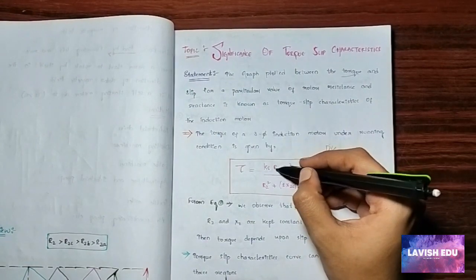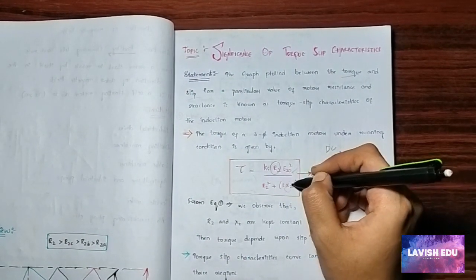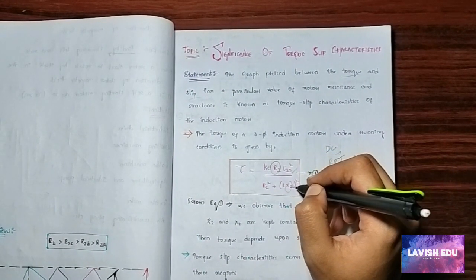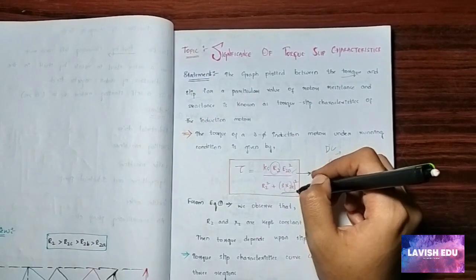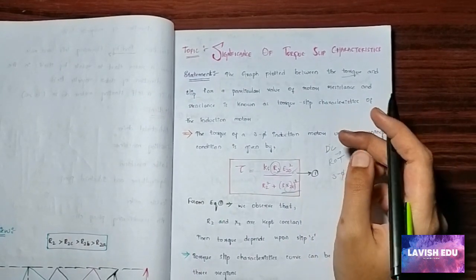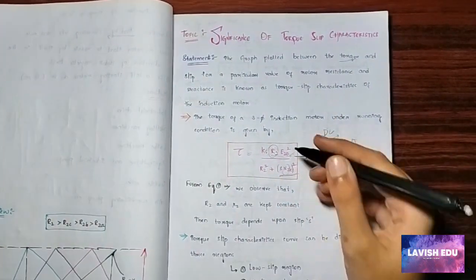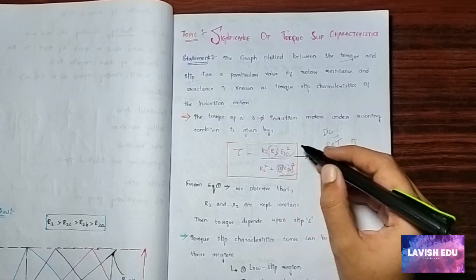Here the X, R2, and X20 values are considered to be constant values. As these values are constant, these values are neglected in this. Here s is nothing but slip.